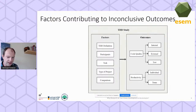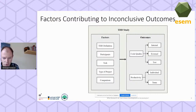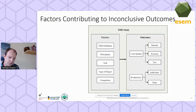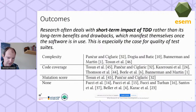Here are the factors contributing to inconclusiveness of TDD research outcomes. The outcomes investigated include code quality — internal quality like maintainability, external quality of the product, and test code quality — as well as productivity of the individual developer or team. The factors we extracted that influence whether reported outcomes are inconclusive are: the applied definition of TDD, participant selection, task selection, the type of project, and the comparison approach.